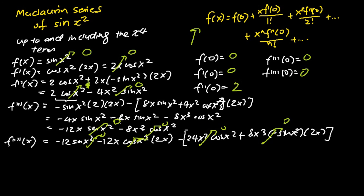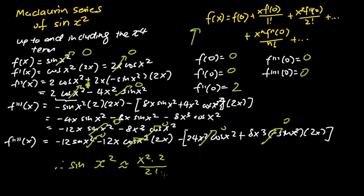We can now apply the Maclaurin series formula to express sine x squared up to and including the x to the power 4 terms. The Maclaurin series of sine x squared is approximately equal to x squared times 2 over 2 factorial, which simplifies to just x squared.